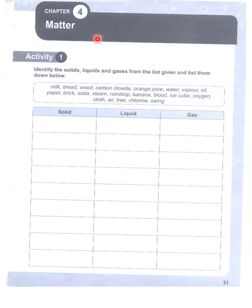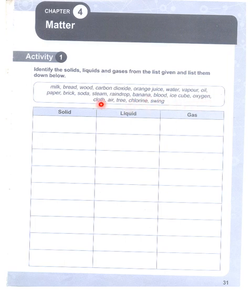First activity: identify the solids, liquids, and gases from the list given and list them down below. The list is: milk, bread, wood, carbon dioxide, orange juice, water vapor, oil, paper, brick, soda, steam, raindrop, banana, blood, ice cube, oxygen, cloth, air, tree, chlorine, and string.